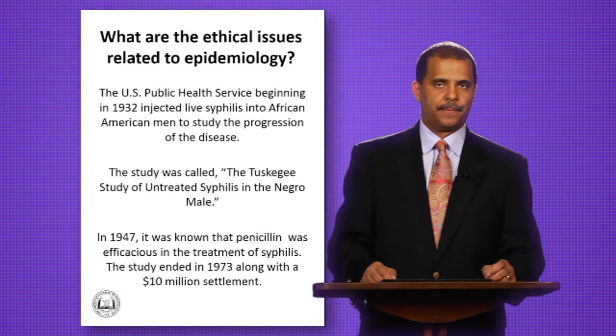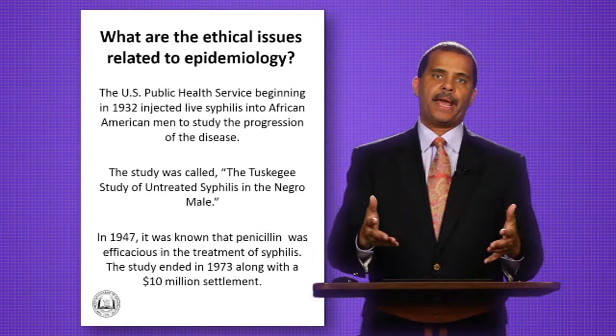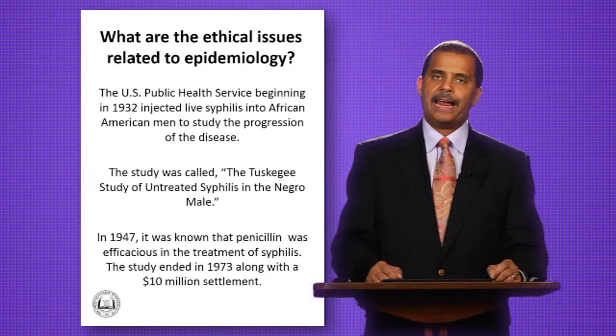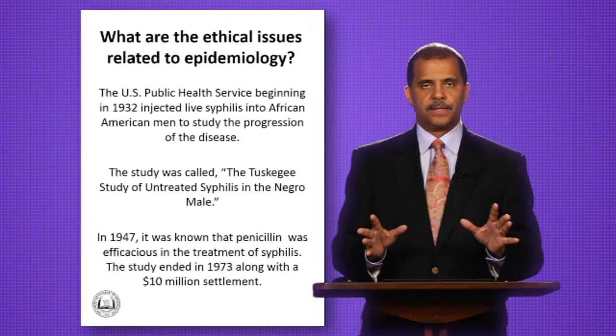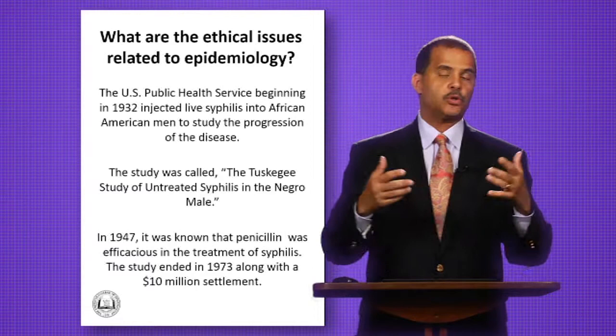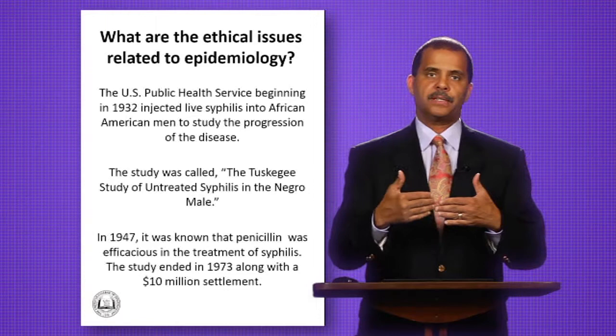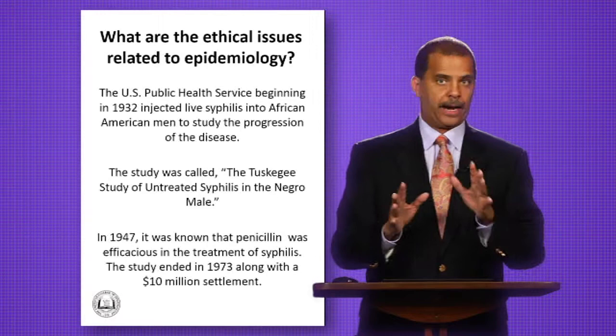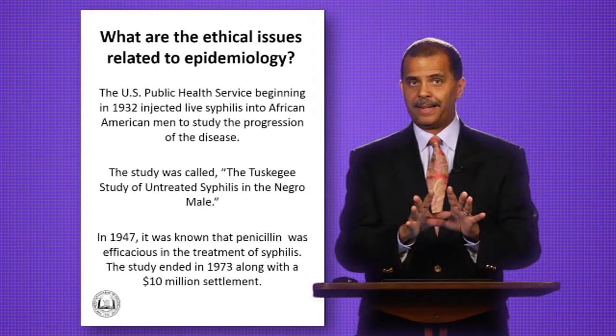What arose from that is that the American College of Epidemiology and other medical, scientific, nursing, and healthcare organizations said this cannot happen anymore in the United States. People gathered together and began to look at things like informed consent and institutional review boards. So if you're working for a hospital or a university, before you conduct research on humans it has to go through human subject review — an IRB, an institutional review board — to make sure these types of things don't happen in the future.